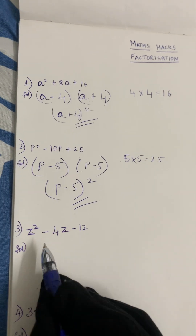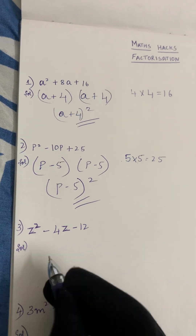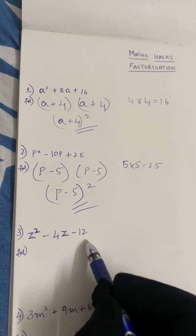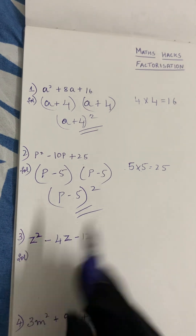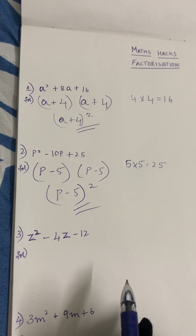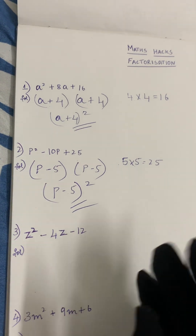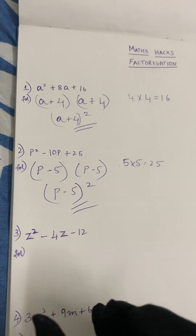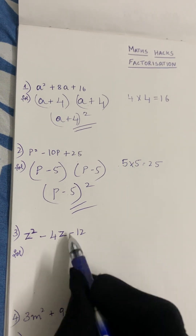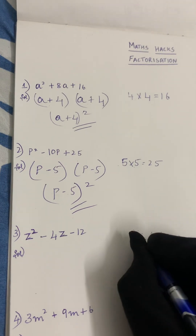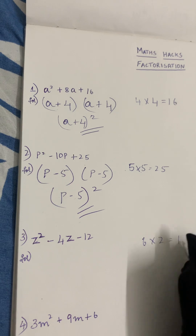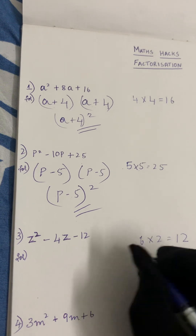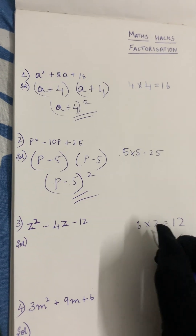Now let's solve the third sum: z squared minus 4z minus 12. What are the two numbers? If we multiply we should get 12, and if we add or subtract we should get 4. Let's take 6 and 2, because 6 into 2 gives you 12, and if we subtract 6 minus 2 we get 4.